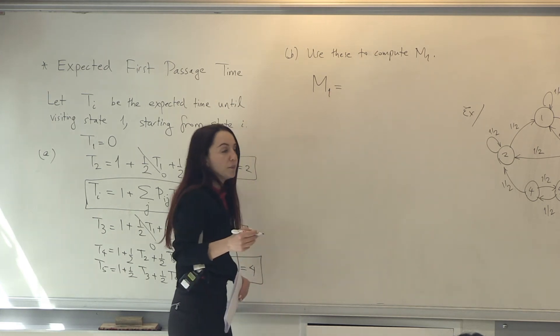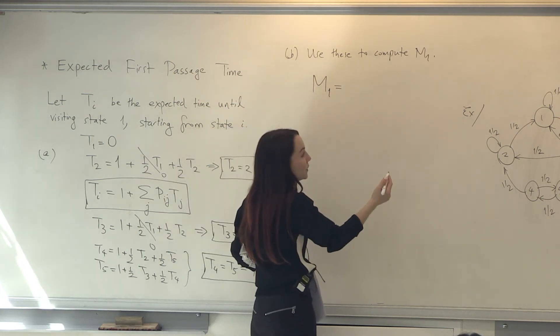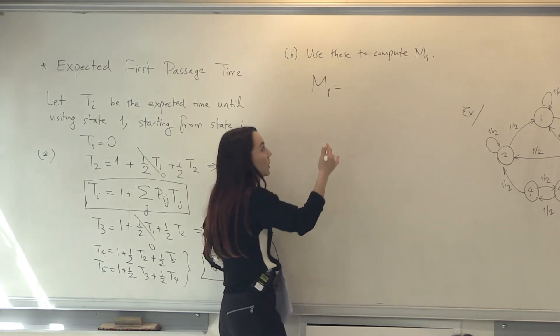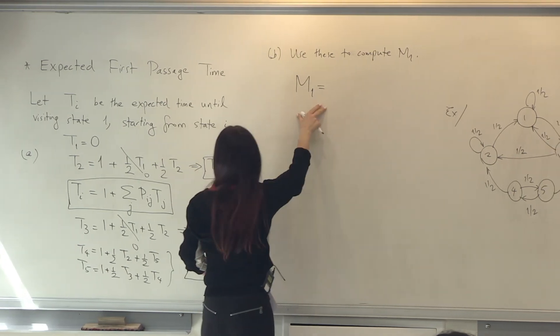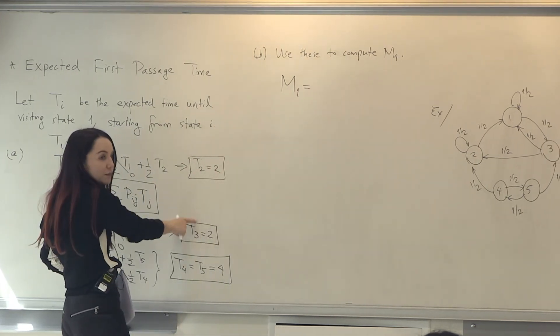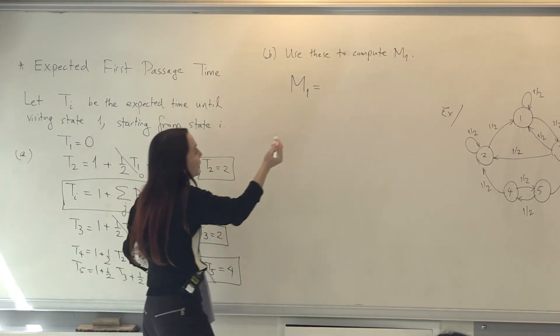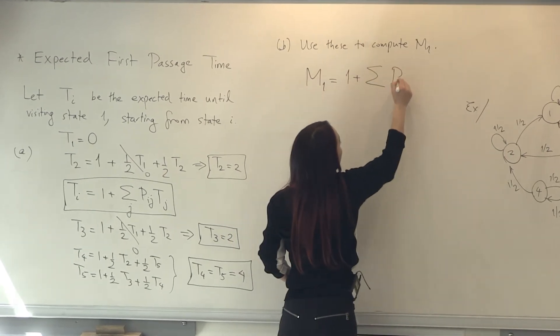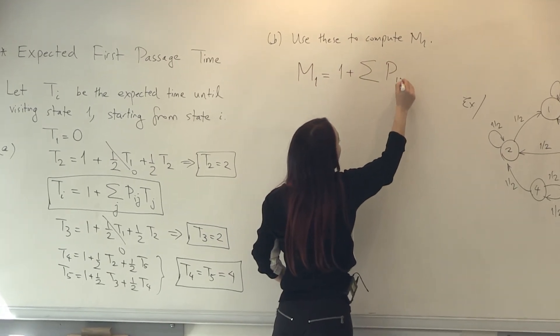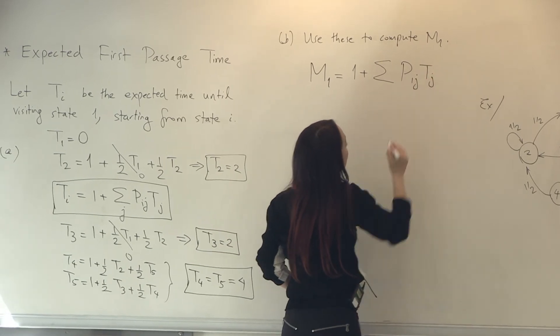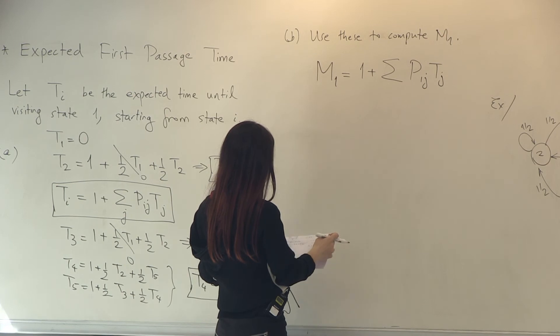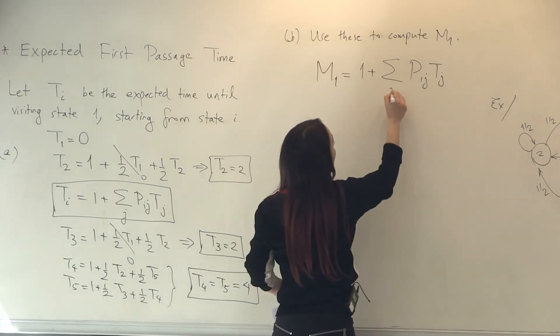So clearly, this is going to be at least 1, and depending on where we go, we will return to 1. So maybe we can express M1 in terms of the Tis. So M1 is going to be 1 plus summation P1j times Tj. How about that? Summed over all j.